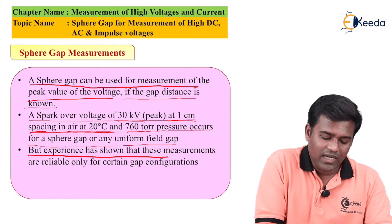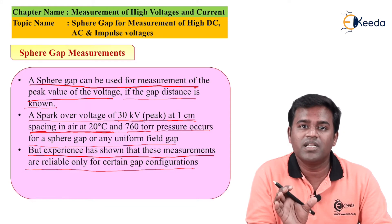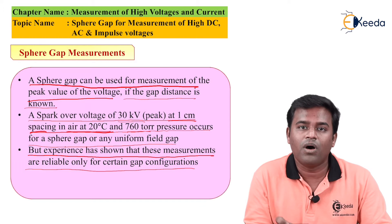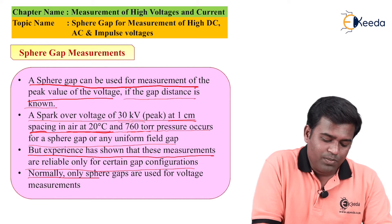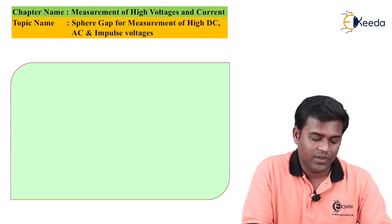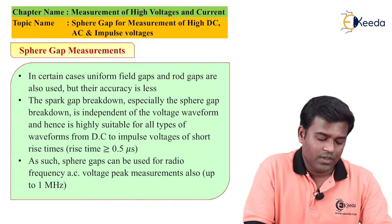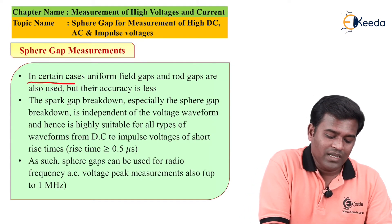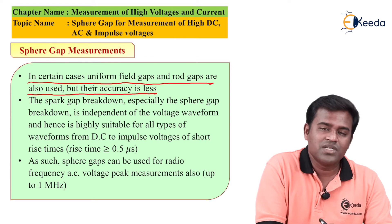Experience has shown that these measurements are reliable only for certain gap configurations — meaning the distance must be maintained for Sphere Gap measurement. Normally, only Sphere Gaps are used for voltage measurements, as Sphere Gap measurement is for peak voltage measurement. In certain cases, uniform field gaps and rod gaps are also used, but their accuracy is less.